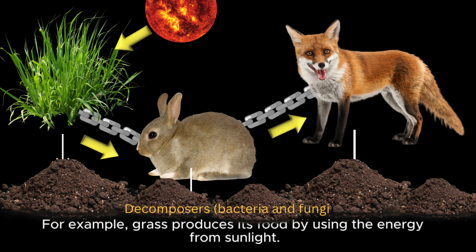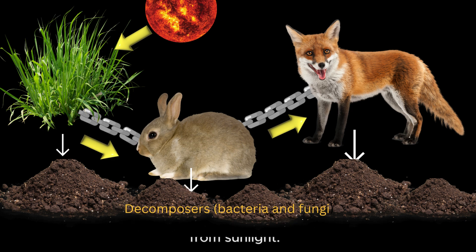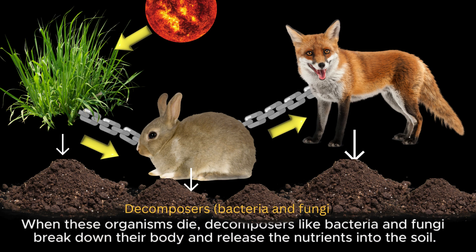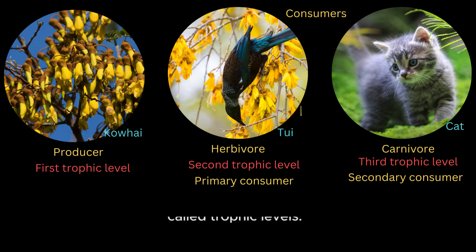For example, grass produces its food by using the energy from sunlight. A rabbit eats the grass, and a fox eats the rabbit. When these organisms die, decomposers like bacteria and fungi break down their bodies and release the nutrients into the soil.